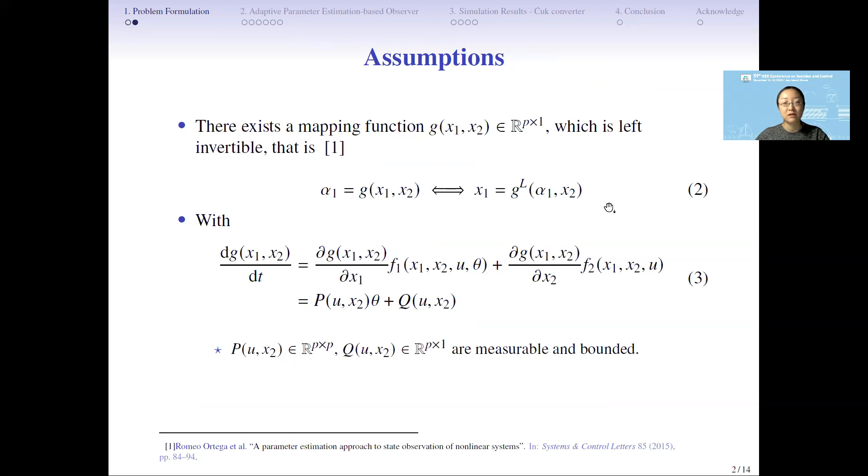Before we introduce the algorithm, first we assume that we can find a mapping function g. This g function is only relative to x1 and x2, and also this function is left invertible such that x1 could be recovered through the mapping function. Also, the derivative of this mapping function, we can find the relation that theta is linearized with a regressor matrix p. Moreover, this p matrix and q are measurable and bounded.